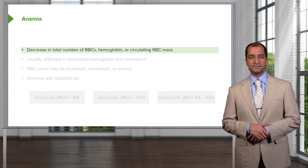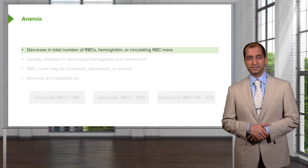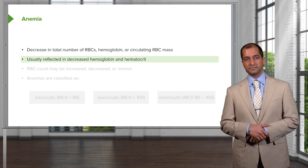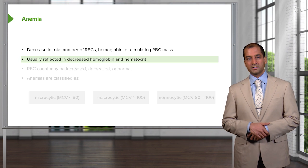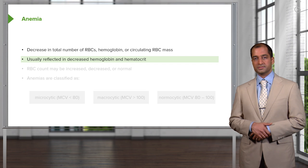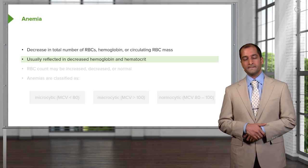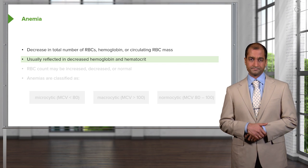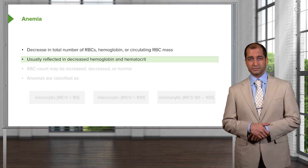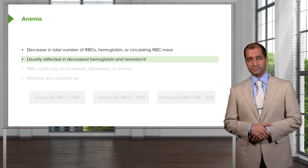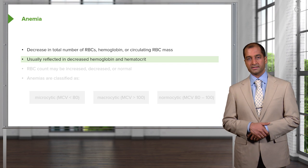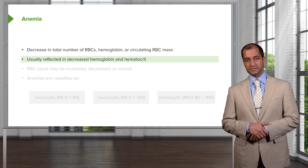Along with this, oftentimes you will find a decrease in total number of RBCs, even though that is not a guarantee. And the circulating RBC mass is usually decreased as well. By definition, anemia means decreased hemoglobin, which means you're not able to properly deliver oxygen to your tissues, which are starving and hungry, and so therefore tired. In addition, oftentimes with hemoglobin, you'll find that hematocrit will be decreased as well.